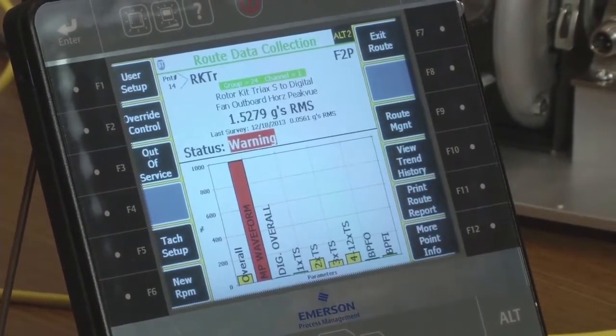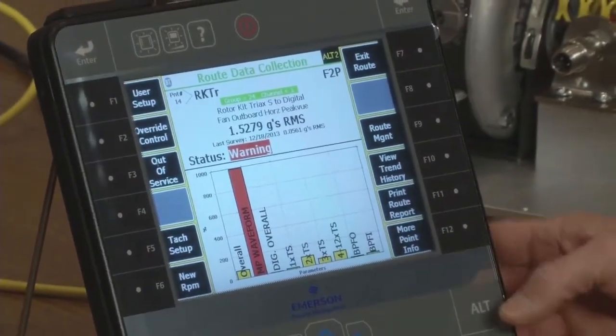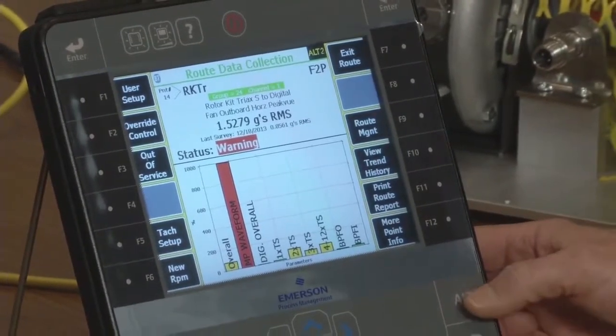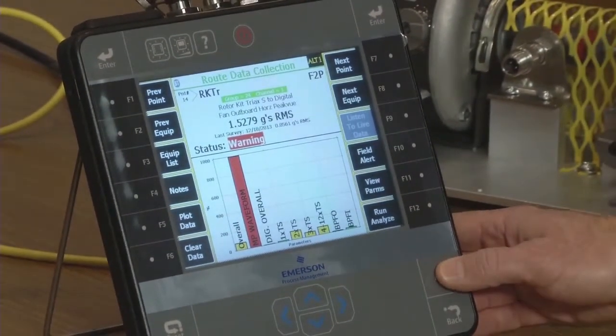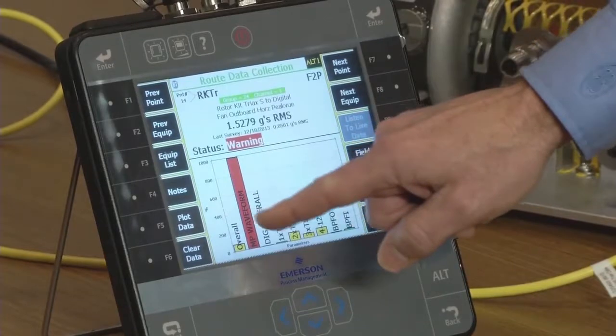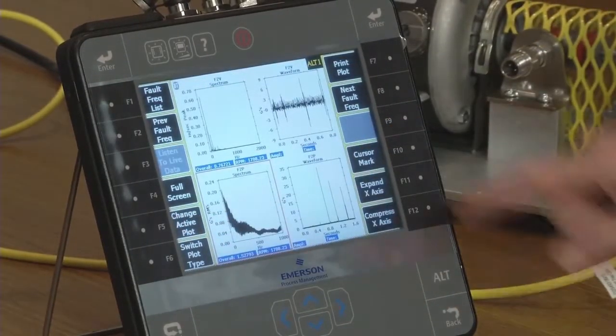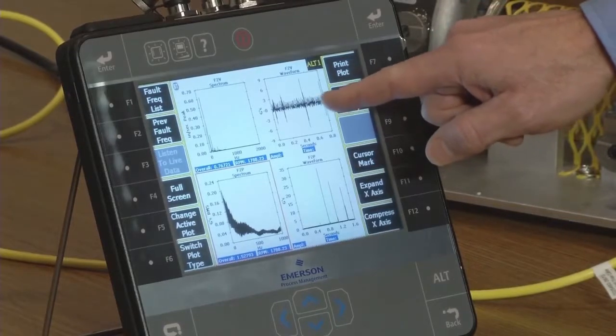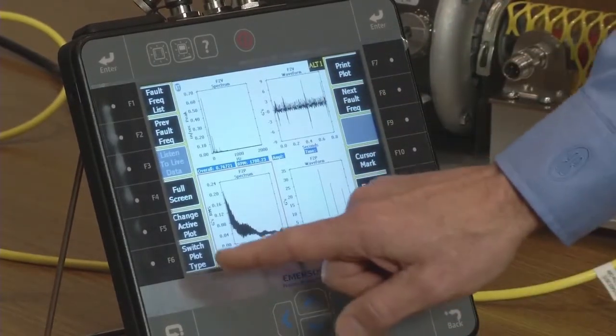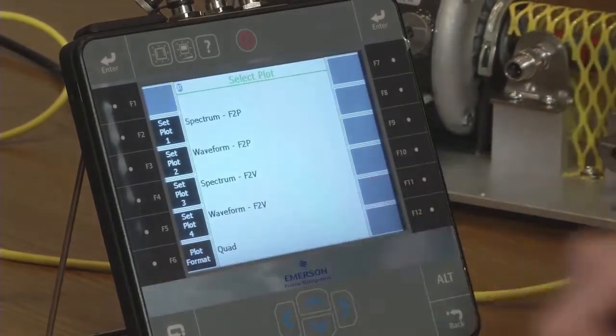So to further look at this problem I'm going to hit my alt button which takes me back to where I can actually look at the waveform. Hit my plot data and this is my waveform here, but I want to blow it up. So to blow it up I'm going to change my switch plot type.